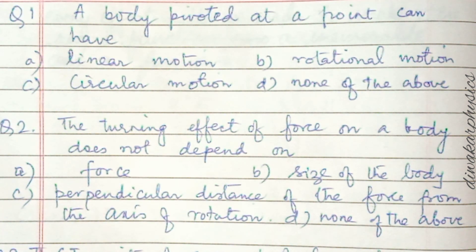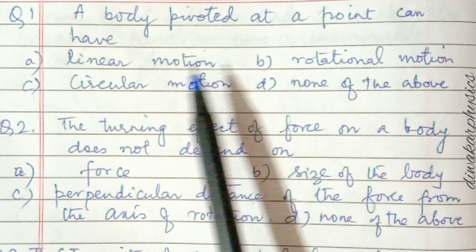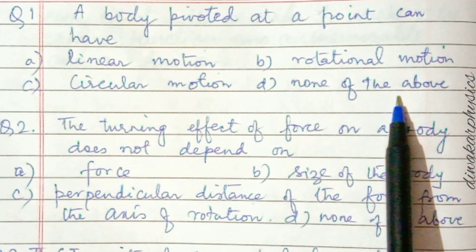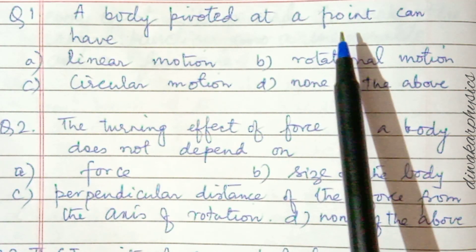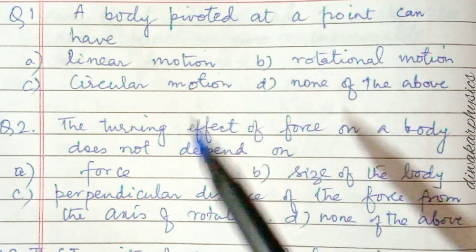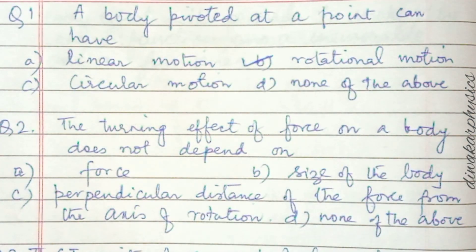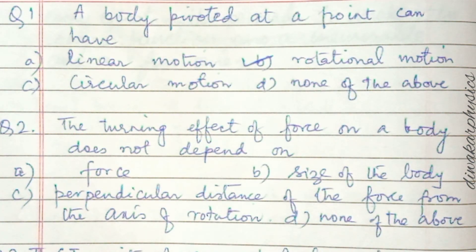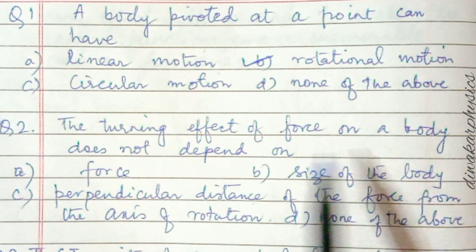Question number one: a body pivoted at a point — can it have linear motion, rotational motion, circular motion, or none of the above? A body pivoted at a point, when force is applied, will have rotational motion. So the second answer is correct.